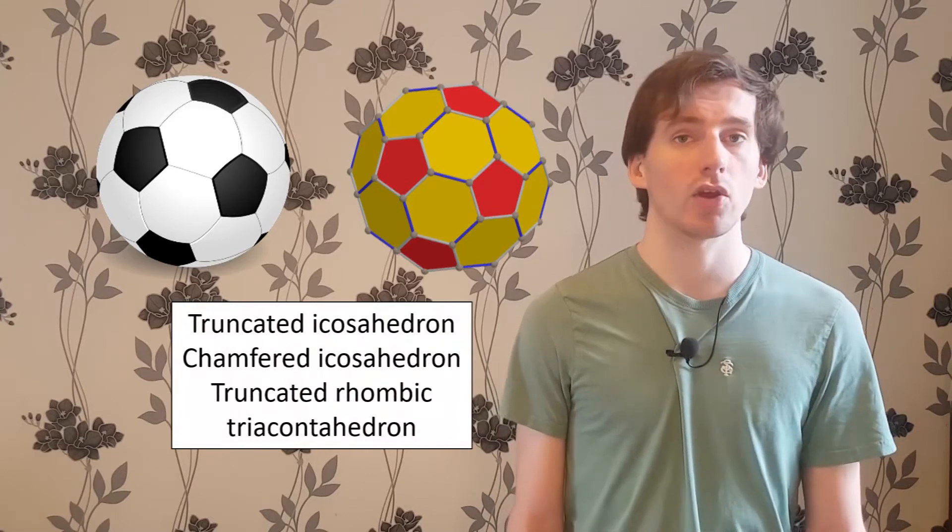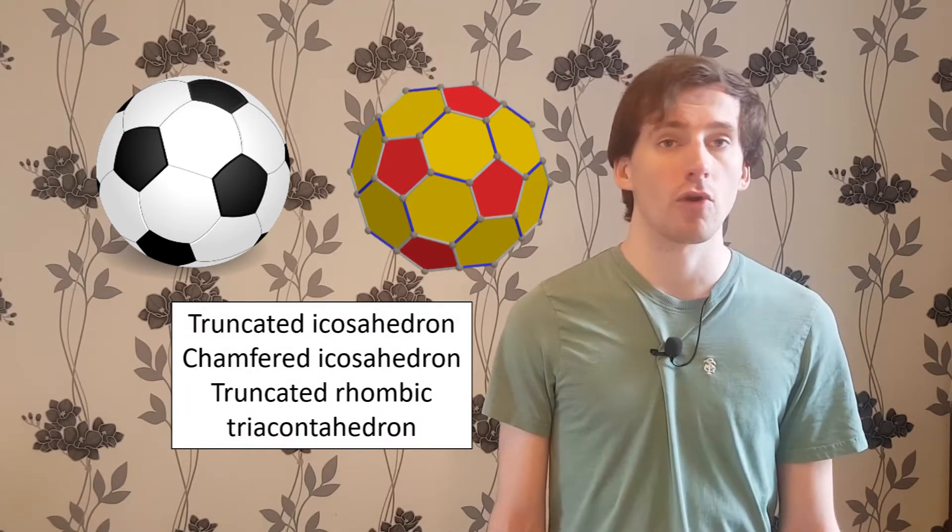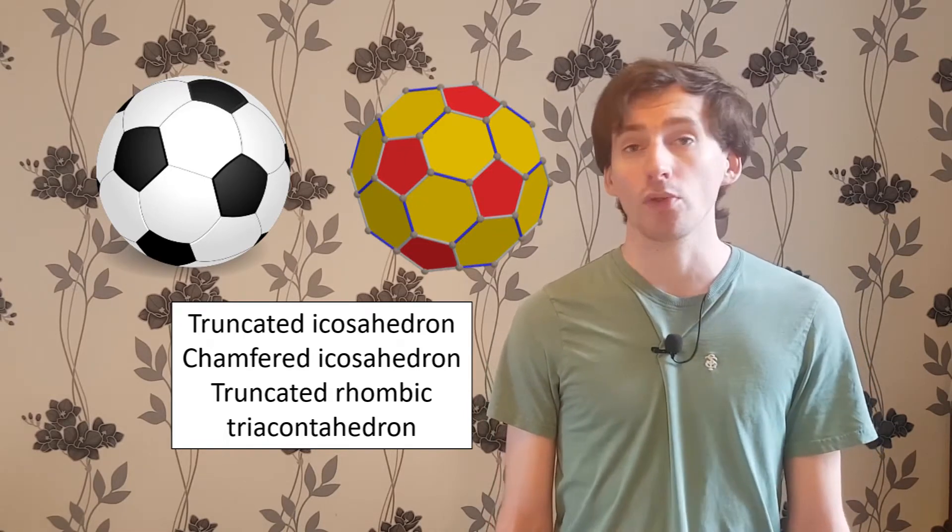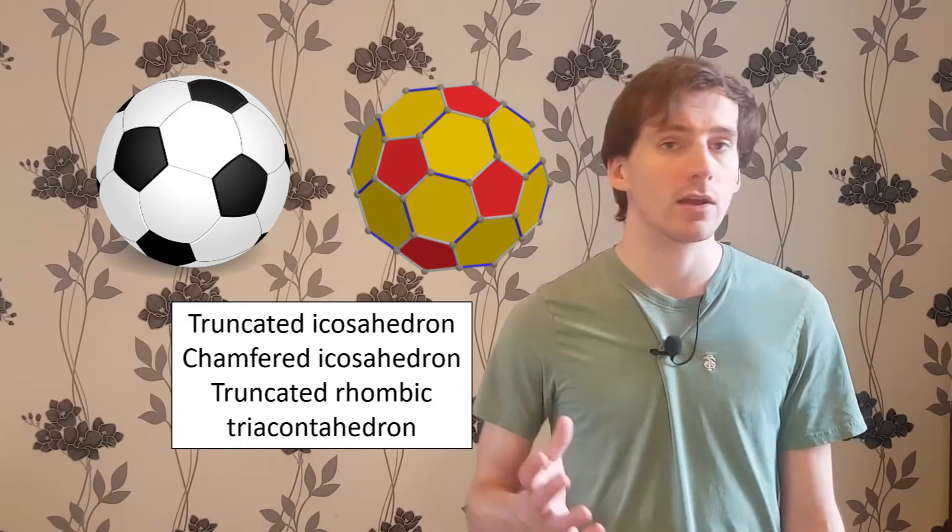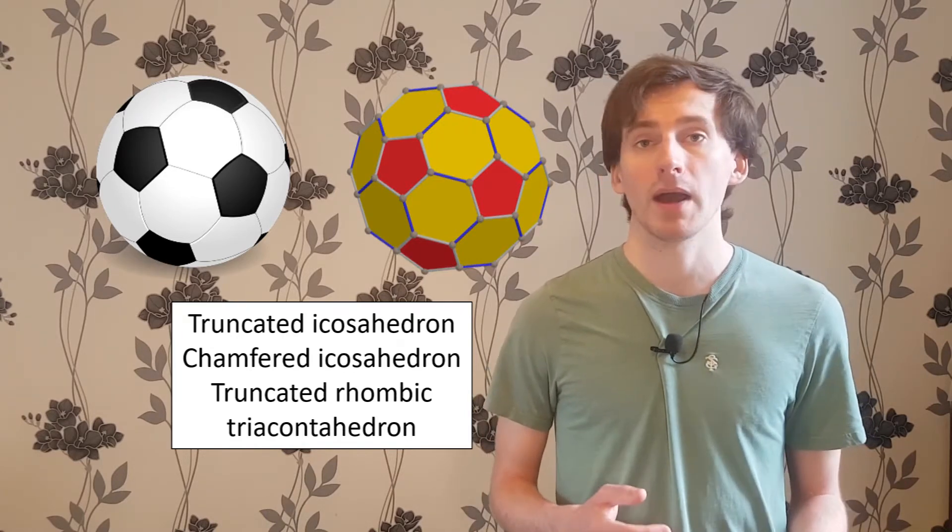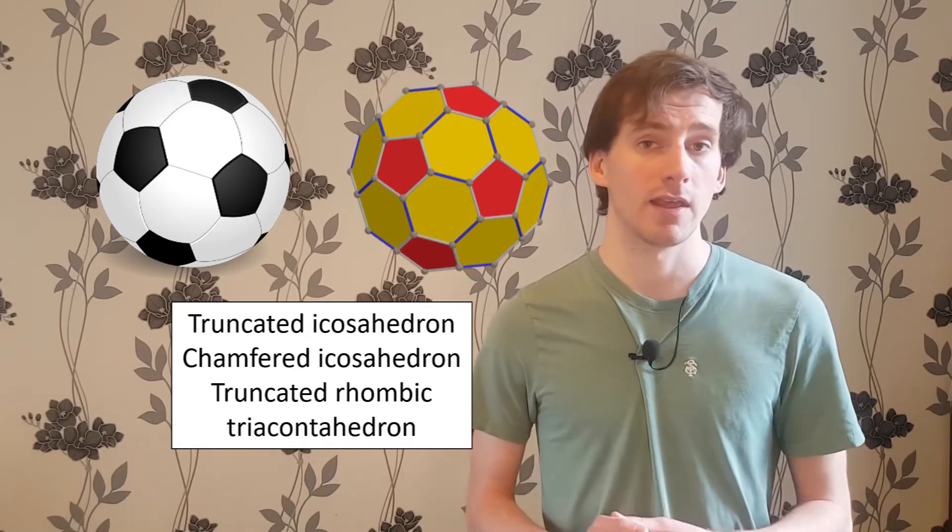This is true for any polygonal tiling, not just the regular ones. For example, the polyhedral version of a football is called variously a truncated icosahedron, a chamfered icosahedron, or a truncated rhombic triacontahedron. In general, there's a one-to-one relationship between polygonal tilings of the sphere and convex polyhedra. We might swap back and forth between these two viewpoints, as is convenient in these videos.